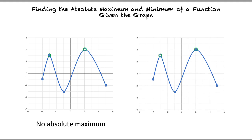Yes. If a hole is present on the graph but not at the highest point, the absolute maximum will still be located at the greatest y-value. For example, on the second graph, the hole has moved to x equals negative 3. We know the highest y-value is located at the coordinates 2 and 4, so the absolute maximum will be x equals 2.